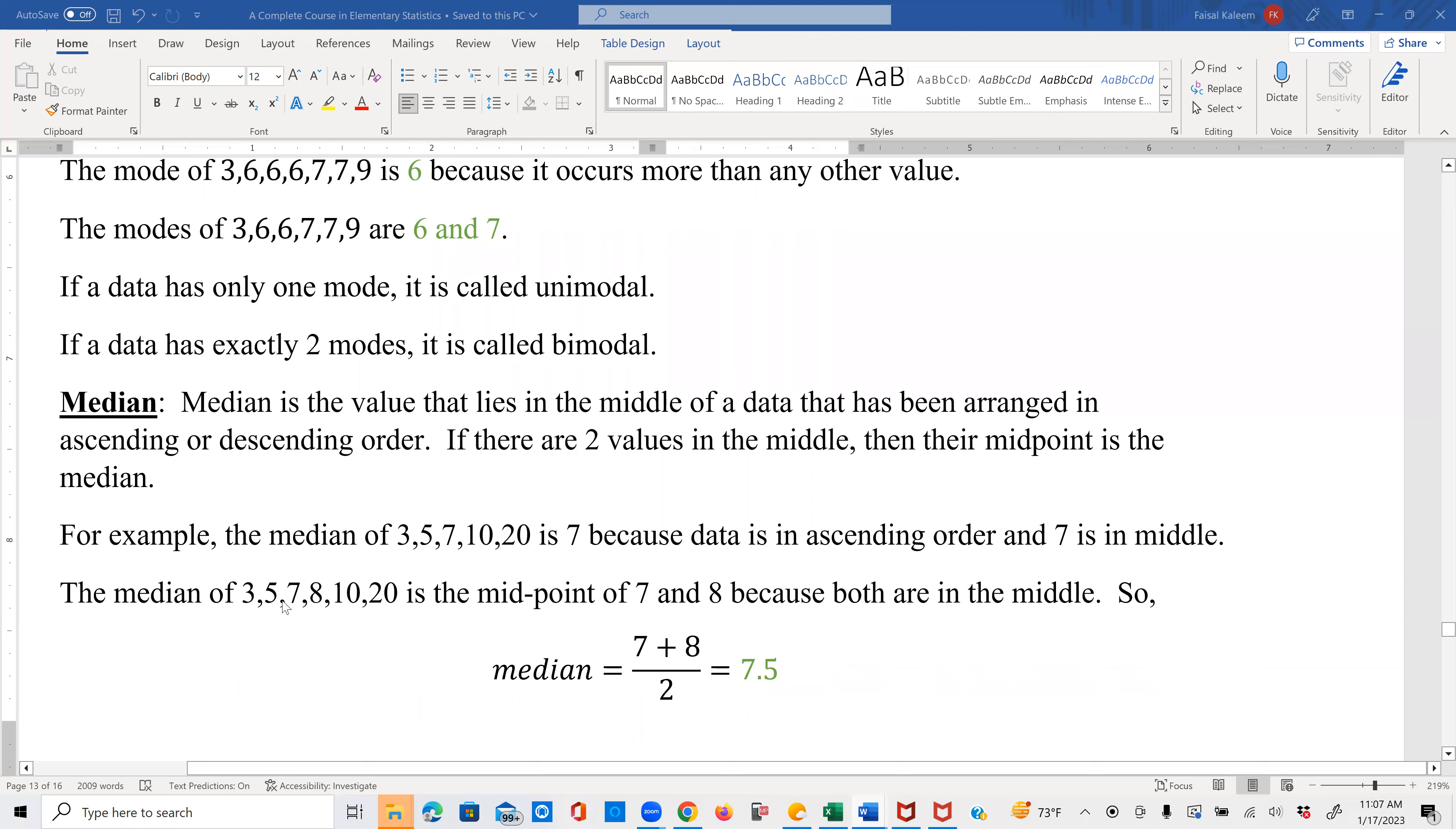Whereas if we have 3, 5, 7, 8, 10, 20, now you see that 7 and 8 both are in the middle because there are two values on the left of this pair and two values on the right of this pair. And there's not one single value which is in the middle. So 7 and 8 are in the middle. So therefore, now the median will be the midpoint of 7 and 8. And we know that the midpoint of two numbers is obtained by adding them and dividing them by two. So in this case, the median is 7.5.